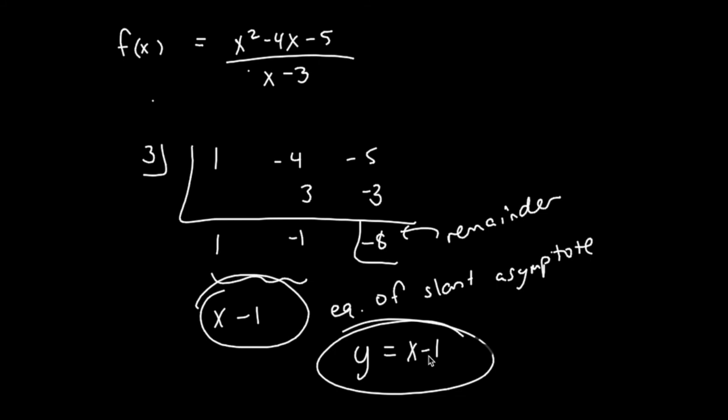So you could graph these functions if there's a slant asymptote by graphing the diagonal that corresponds to the function. But to find slant asymptotes, you divide and then ignore the remainder, and whatever is here is your equation of your slant asymptote.